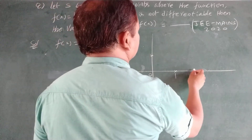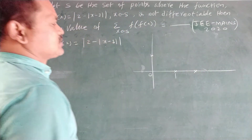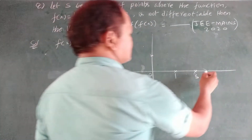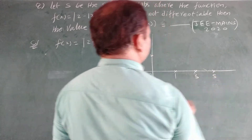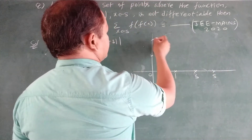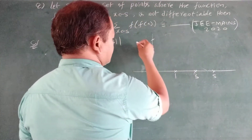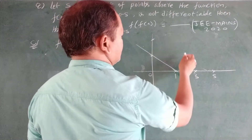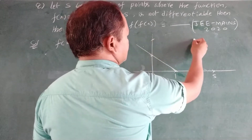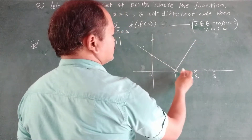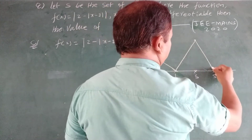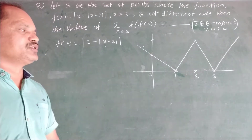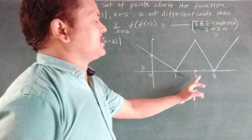For x = 3, f(3) = 2. For x = 5, f(5) = 0. So this is the position of the graph. The graph meets at key points: at x = 2 and x = 3 it is 2, and again at x = 5 it is 0. The function is non-differentiable at x = 1, 3, and 5.